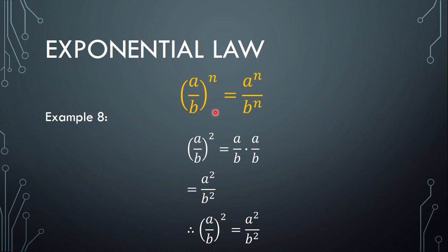Exponential law number 8. Similarly, if we have a over b to the power of n, we can simply distribute the power to get a to the power of n over b to the power of n. For example, (a over b) squared means we multiply a over b two times, giving us a squared over b squared. We can simply distribute the power.